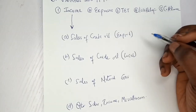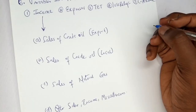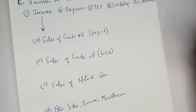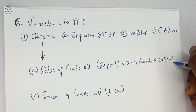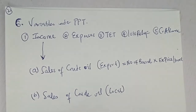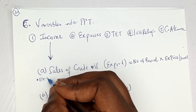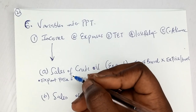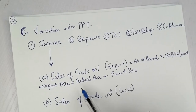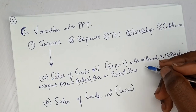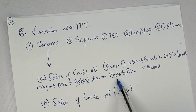Export sales of crude oil means selling to a foreign country, so exchange rates are involved. The formula is: number of barrels multiplied by the export price per barrel — for example, 50,000 barrels times 5 naira per barrel. However, that export price is either the actual price or the posted price, and you must pick the higher of the two.